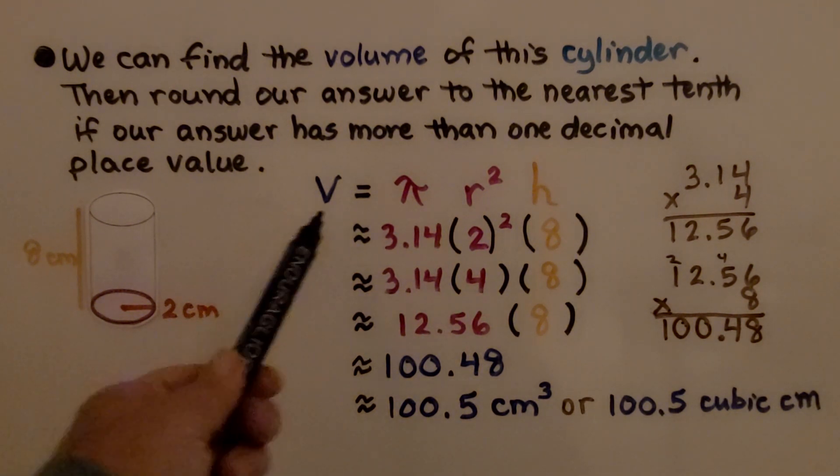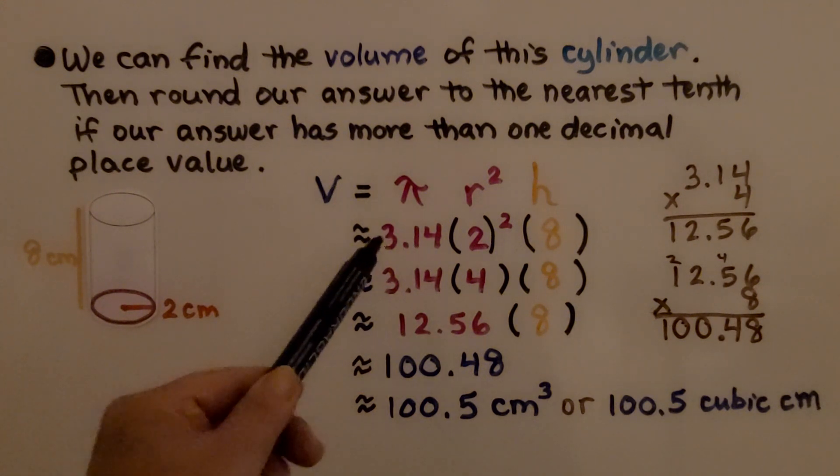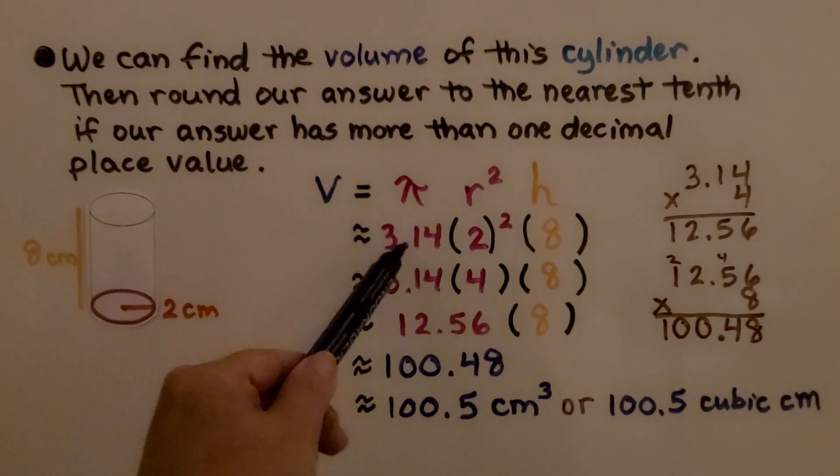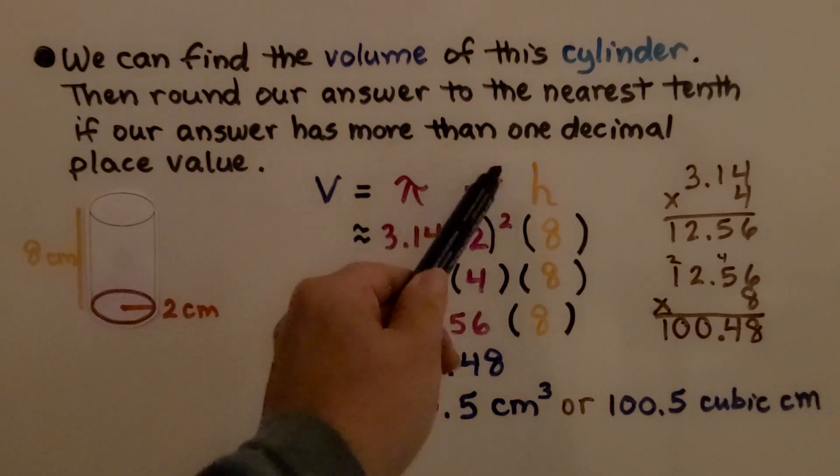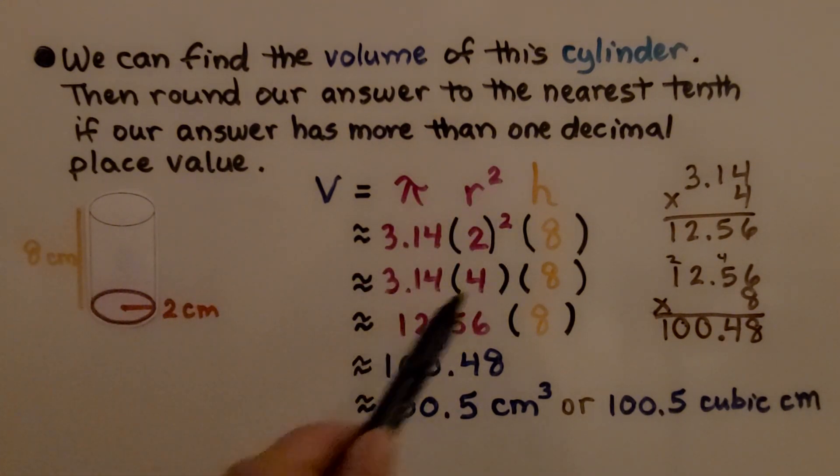We have our formula to find the volume. We substitute in 3.14 for pi. We know the radius is 2, so we're going to have 2 squared for r squared and the height is 8.